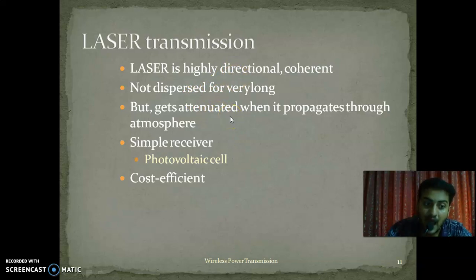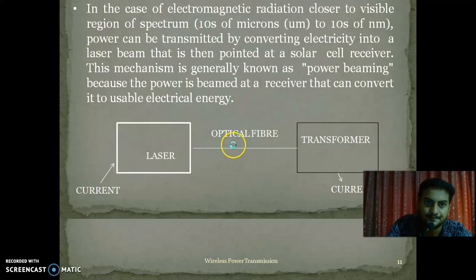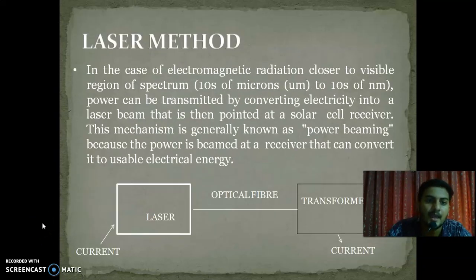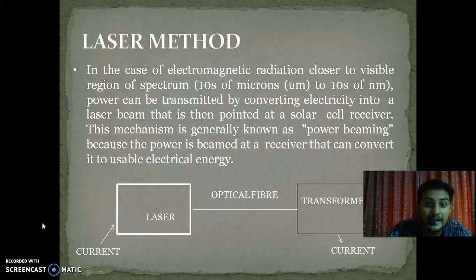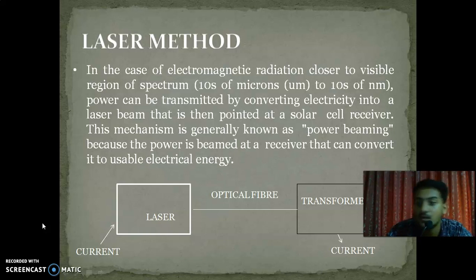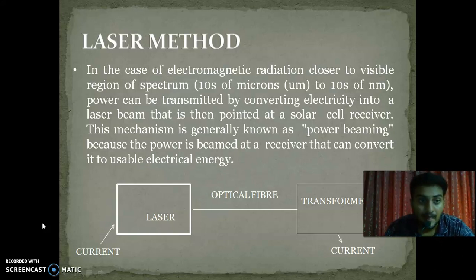We need to check how this works in wireless transmission of power. In the case of electromagnetic radiation closer to the visible region of the spectrum, power can be transmitted by converting electricity into a laser beam that is then pointed at a solar cell receiver. This mechanism is generally known as power beaming because the power is beamed at a receiver that can convert it to usable electrical energy.